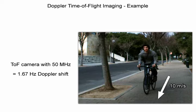For example, the frequency shift of a time-of-flight camera operated at 50 megahertz, introduced by a road cyclist traveling at 10 meters per second, is about 1.67 hertz. Although this is a very subtle shift, we demonstrate that even such a minute change can be analyzed to extract valuable velocity information.